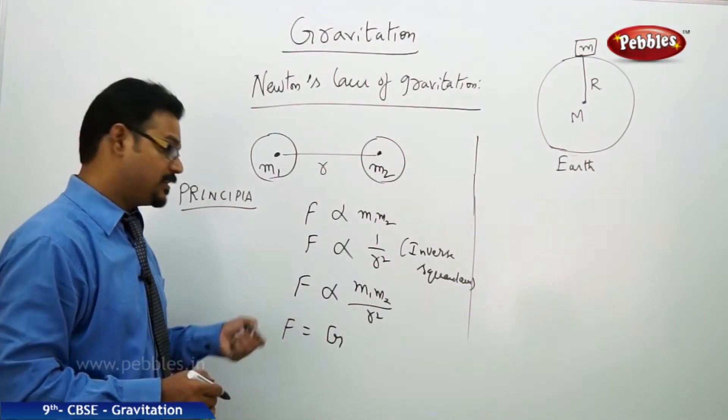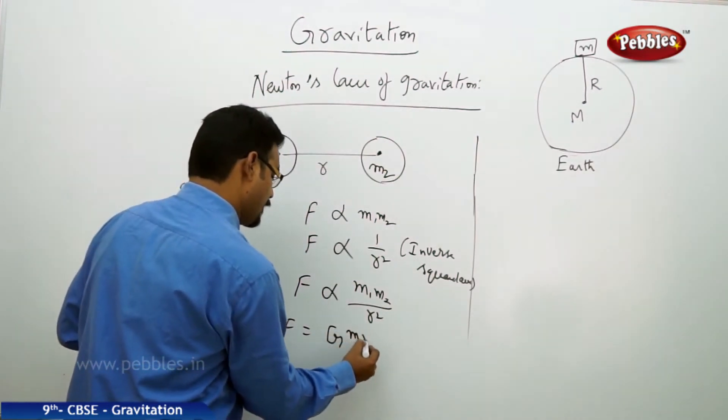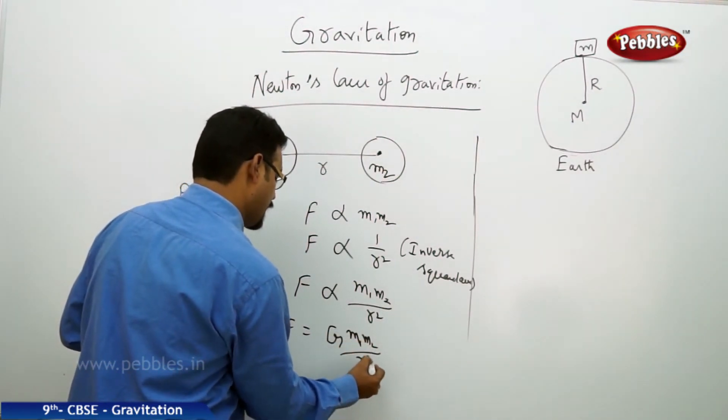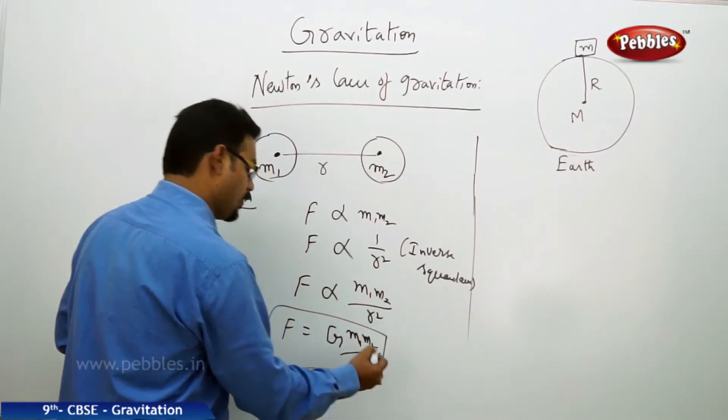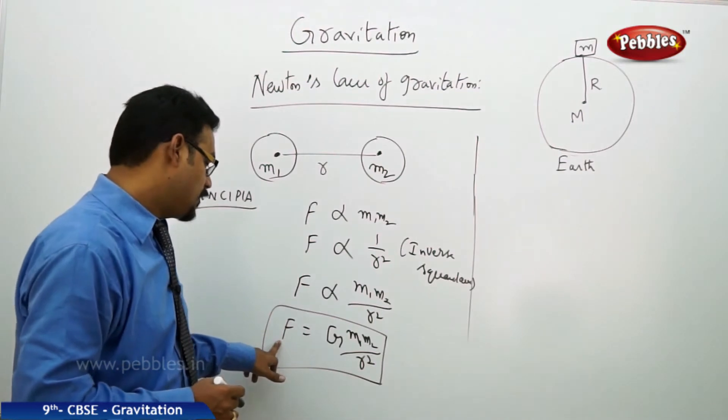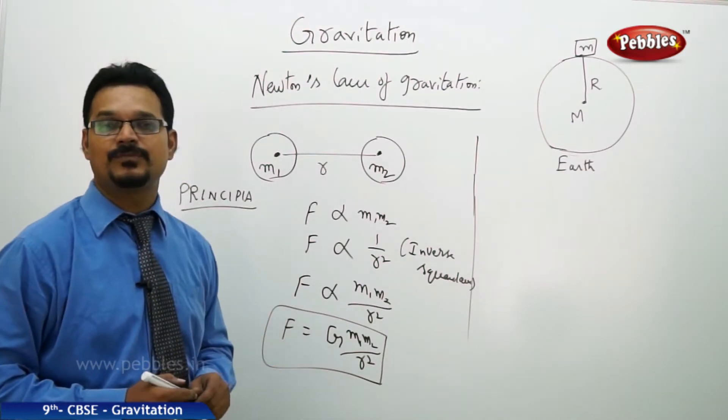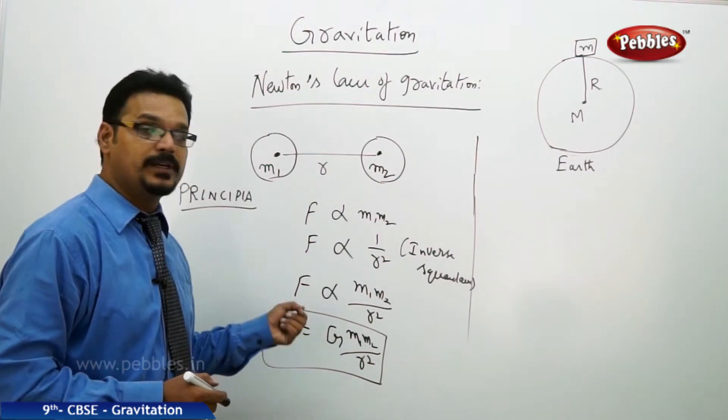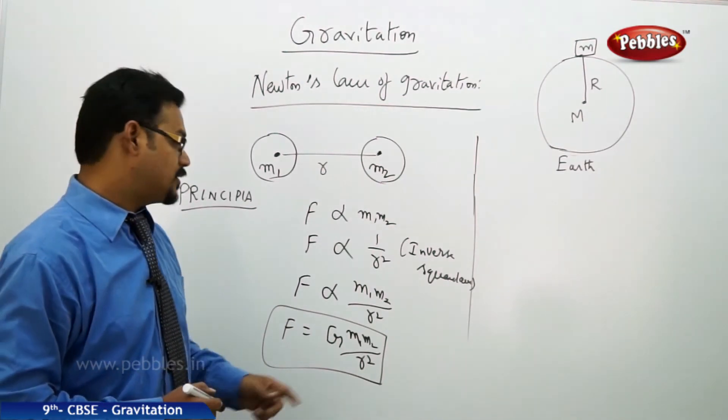To remove the proportionality, we keep a constant, and this constant is capital G. You can give any symbol, but there is significance for this constant - that's why we're taking only this symbol capital G. So F equals G m1 m2 by r square. This is what's called Newton's law of gravitation, and this force is called gravitational force. The question is: what is G?